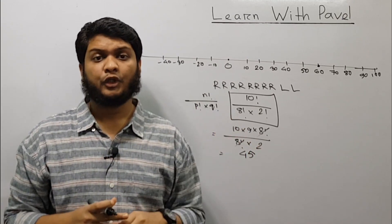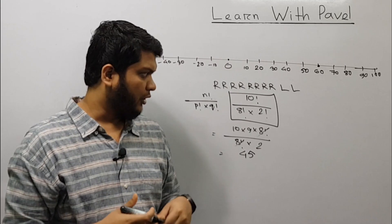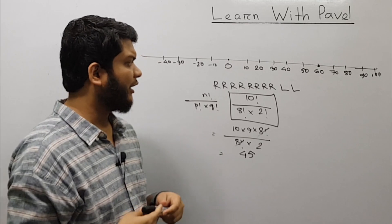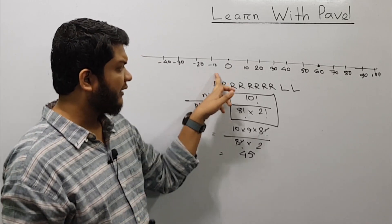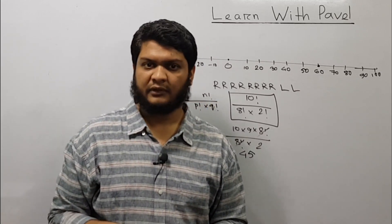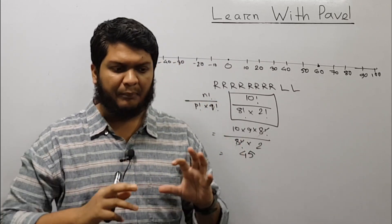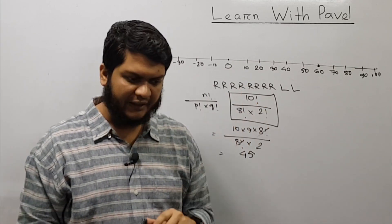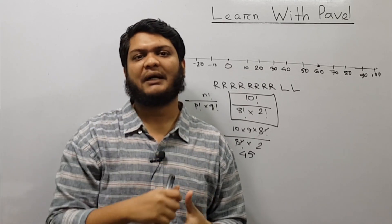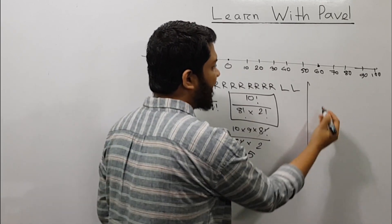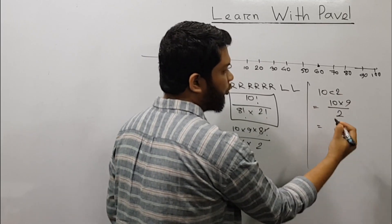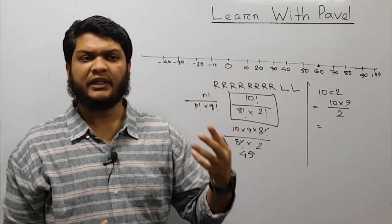It's the same problem using the same concept. The concept is that we have two left bars. So we use 10C2, which equals 10 into 9 divided by 2, and nC2 equals n into (n minus 1) divided by 2.